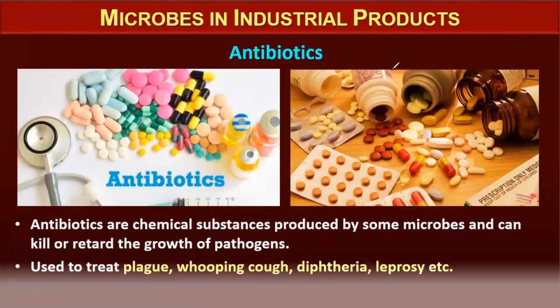Next in industrial production are antibiotics. Antibiotics are chemical substances produced by some microbes that can kill or retard the growth of pathogens. They are used in different bacterial disorders like plague, whooping cough, diphtheria, leprosy, etc.